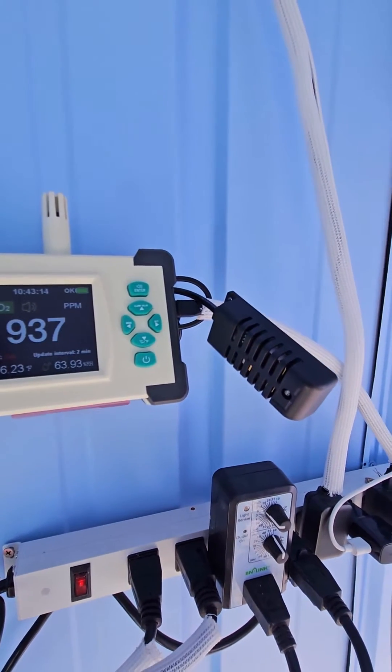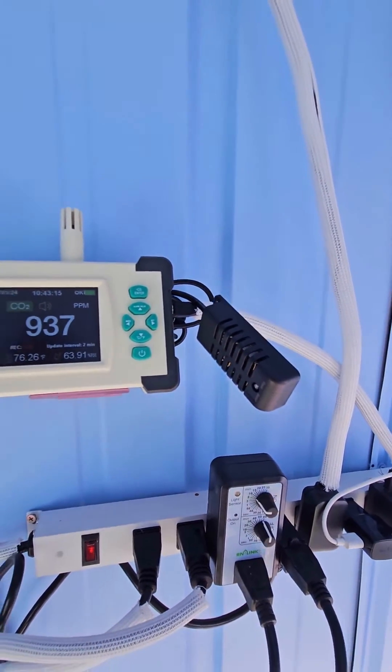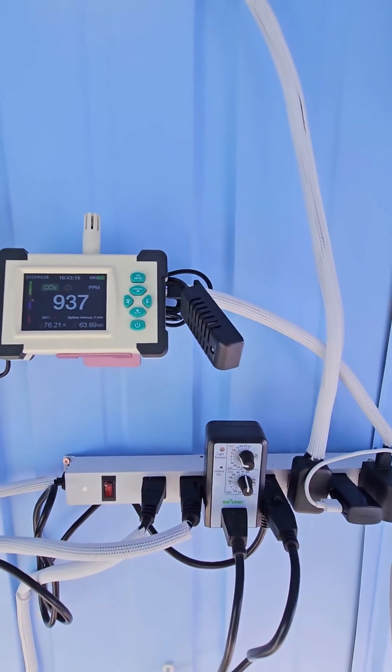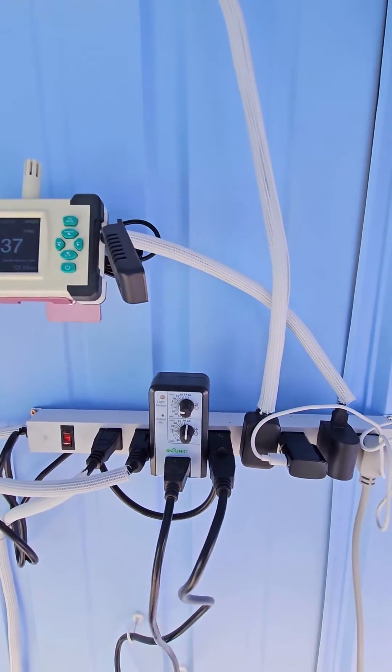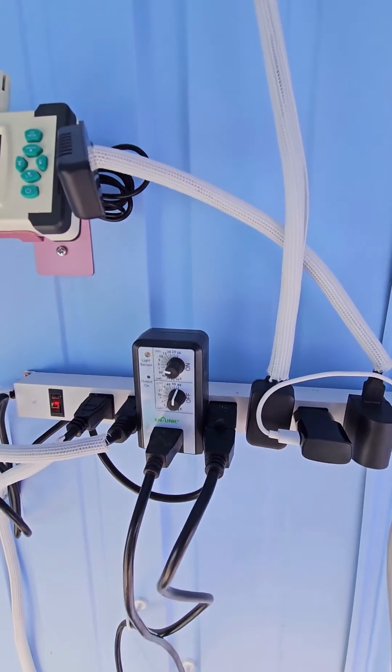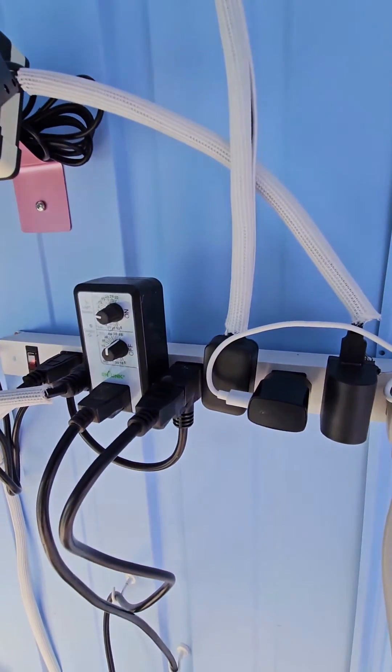This black part is the CO2 sensor that connects to the green unit, and then this white one here is just my traditional CO2 meter. So I'm calibrating the two of them to make sure they're accurate and on the same page.